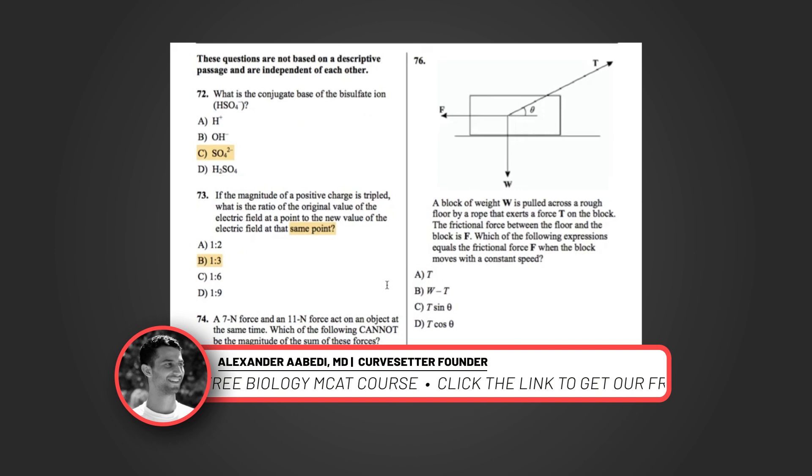Question 76: A block of weight W is pulled across a rough floor by a rope that exerts a force T on the block. The frictional force between the floor and the block is F. Which of the following expressions equals the frictional force F when the block moves at constant speed? When a block moves with constant speed, that tells you that the acceleration is zero. So if the acceleration of an object is zero, then we know that the net force on an object is zero, according to Newton's second law. F equals MA; if A is equal to zero, F net is equal to zero.